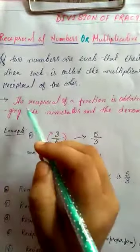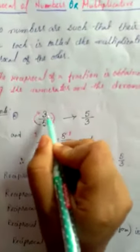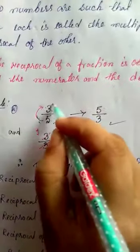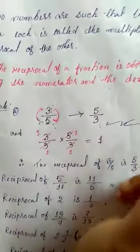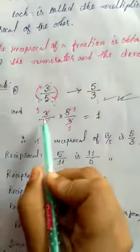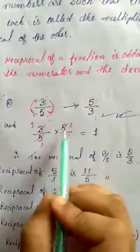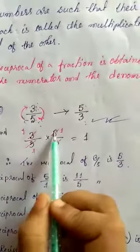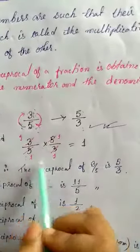The reciprocal of a fraction is obtained by interchanging the numerator and the denominator. For example, the reciprocal of 3/5 is 5/3 — we put 5 on top and 3 on the bottom. To verify: 3/5 × 5/3 — the 3s cancel and the 5s cancel — giving 1×1 = 1. Since the product is 1, they are reciprocals of each other, which is also called the multiplicative inverse.